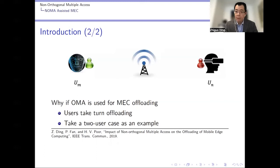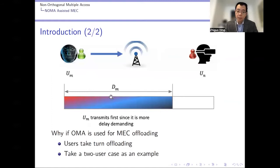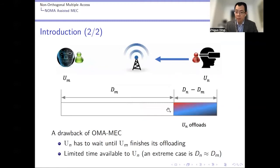This is a very useful concept. If we use conventional orthogonal multiple access, here is what happens. Say we have two users. User M's task is more urgent, so using orthogonal multiple access like TDMA, we serve the user with the more urgent task first. User M uploads first, and afterwards the other user starts uploading. This strategy is simple and can be effective.